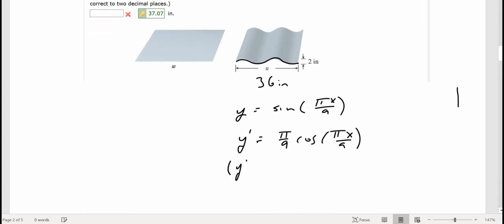Then we're going to have to square that, of course, so y prime squared is going to be pi squared over 81 times cosine squared of pi x over 9.